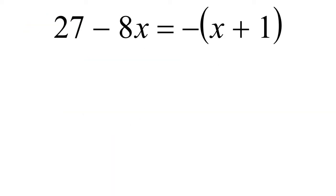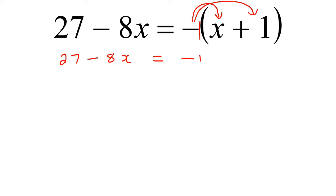Here is the next example. We see that there is a bracket, so our first step is going to be to get rid of the bracket. So we say 27 minus 8x. Now some students get confused about what to do with this minus — remember that is actually a minus one. So we'll multiply that into the bracket, giving us minus one x, or just minus x, and then minus one multiplied by one becomes minus one.